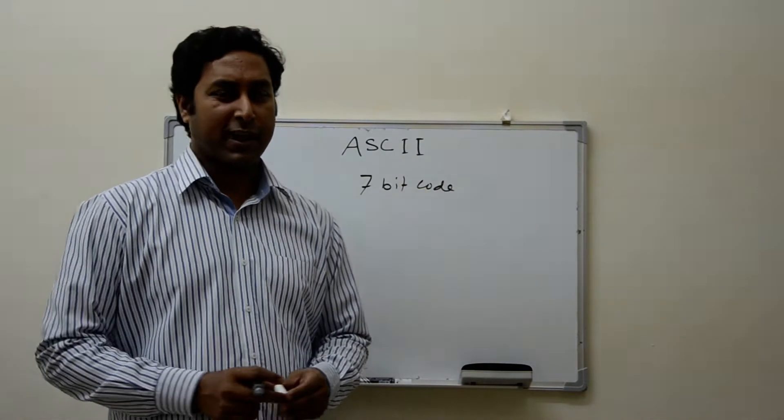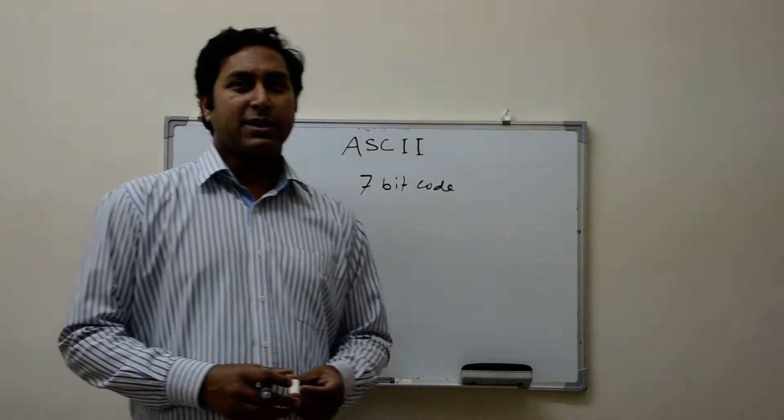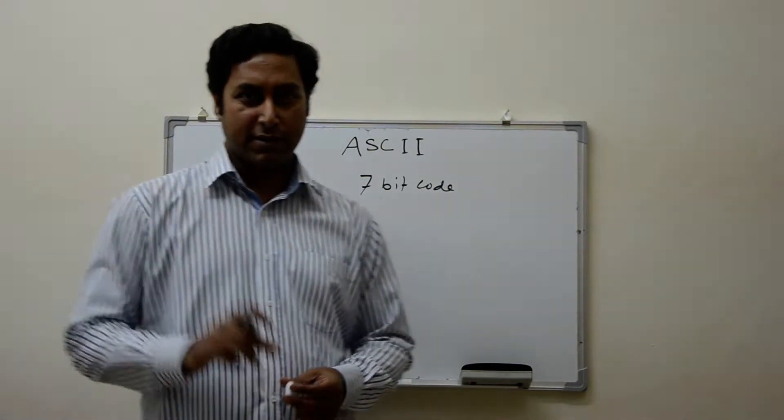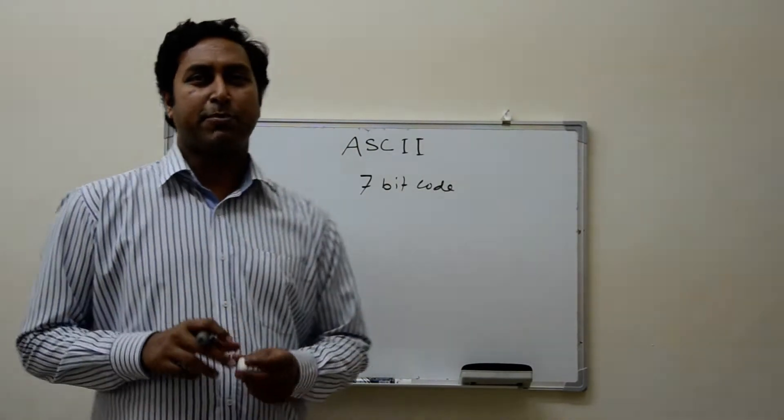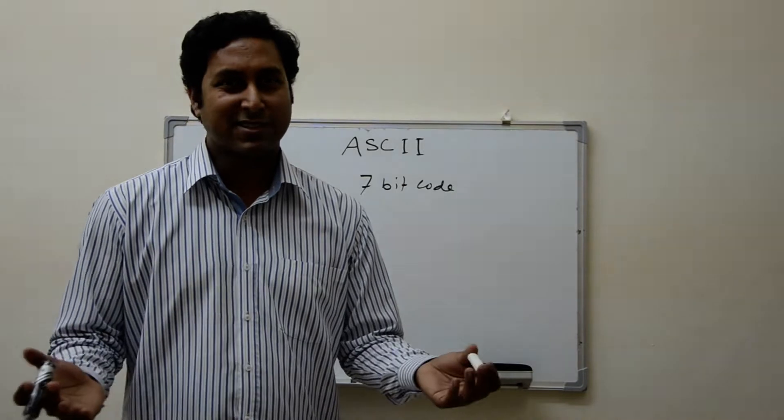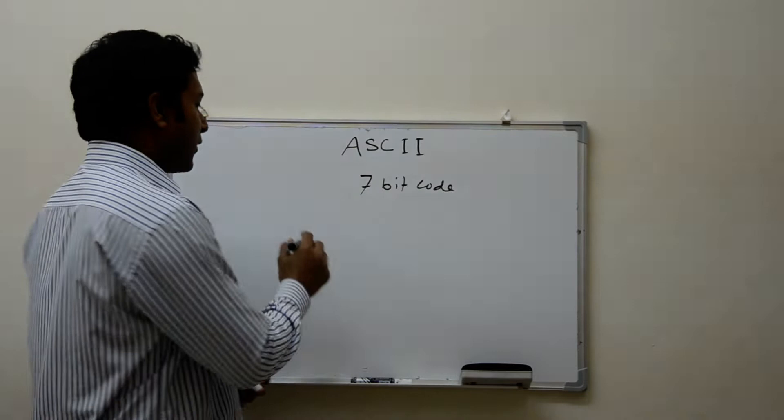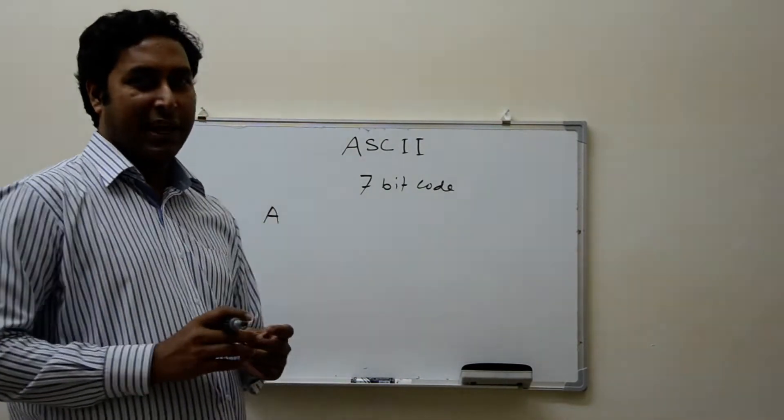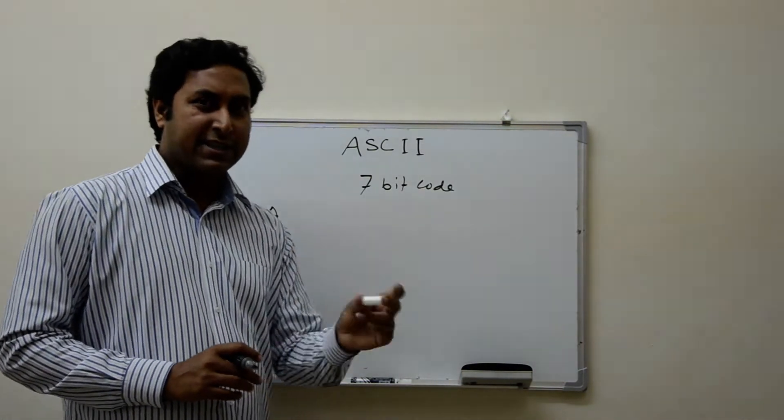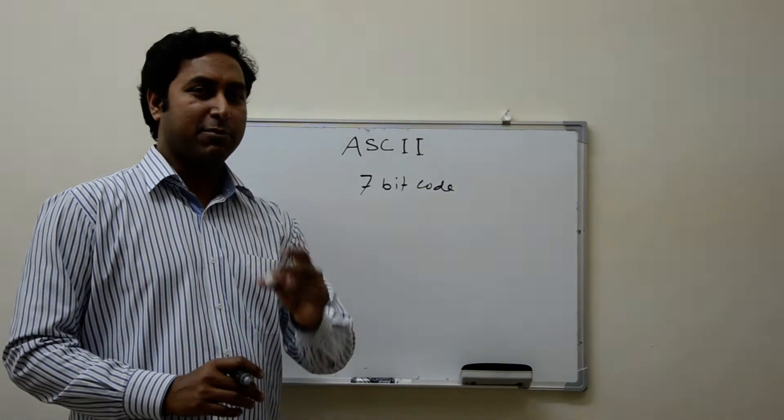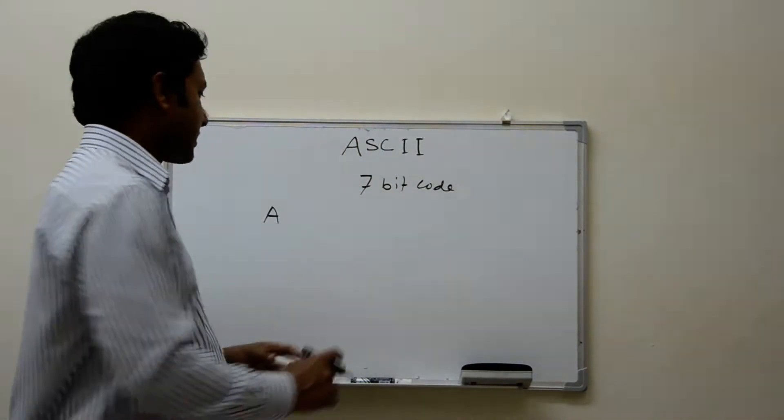We all use keyboard. We all use our computer, and we are very much aware about the keyboard. In the keyboard, you can see it's type A to Z, the numbers are there, there are special characters. Assume you have pressed on A, but computer doesn't understand that A. Computer understands only the binary value. So for each and every key of the keyboard, there is a standard value which is called ASCII value.